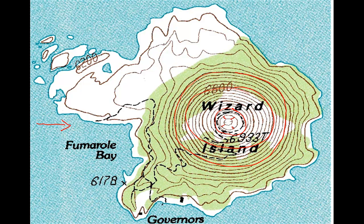You also remember from the photo that Wizard Island has a lava flow that projects to the west. That's the relatively flat area that we see here with more widely spaced contours. Remember, the spacing between contours indicates the relative steepness of the slope. The cinder cone on Wizard Island is relatively steep so we see closely spaced contours, while the lava flow is much flatter with more widely spaced contours indicating a gentler slope.